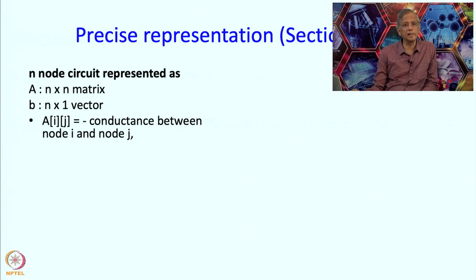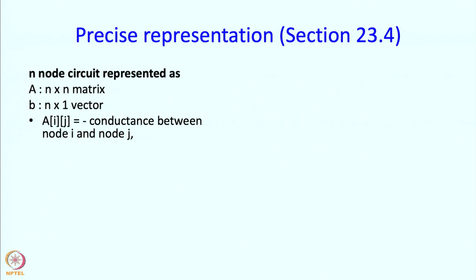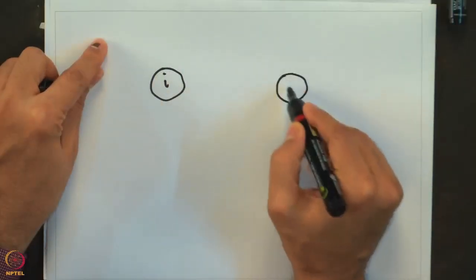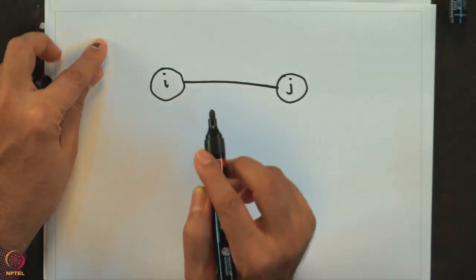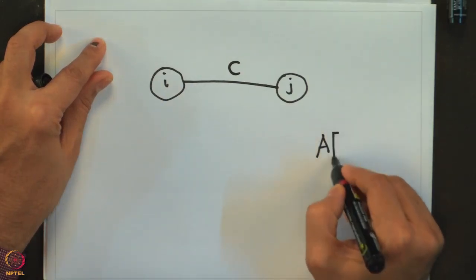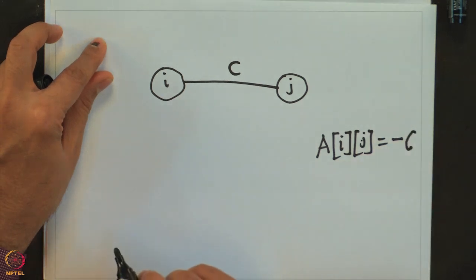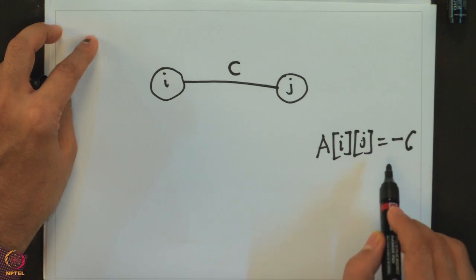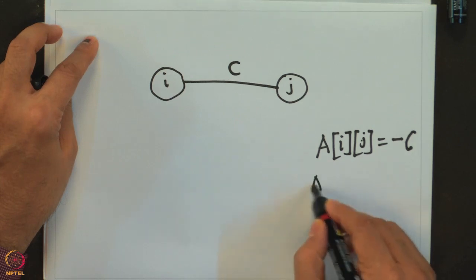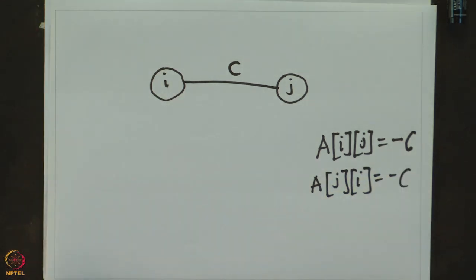Whatever conductance there is between node i and node j, we are going to make an entry of that value in matrix element A[i][j]. So if node i and node j are connected by conductance C, then A[i][j] equals negative C. This is symmetrical, so A[j][i] also equals negative C, and it is 0 if no conductance is specified.